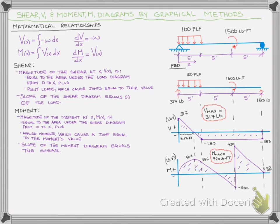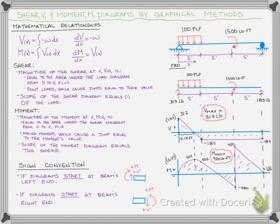The final thing we need to establish to use these graphical methods is a sign convention. We follow the same sign convention we learned for looking at internal forces on the end of a beam. If we start drawing our diagram at the pin where X equals zero on the left side, any sheers going up are considered positive — any forces going up are positive — and a moment going clockwise is considered positive.